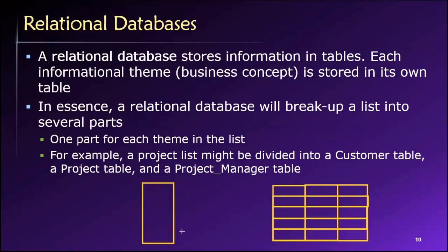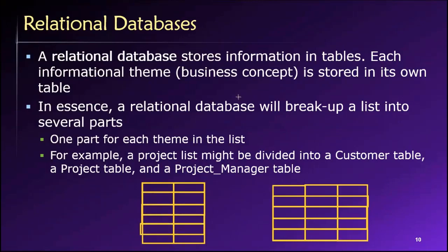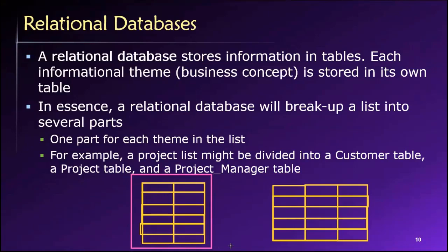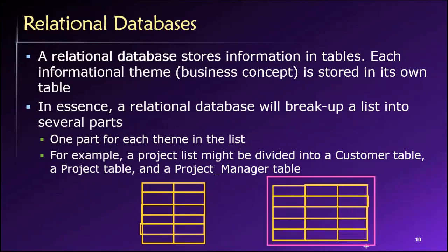For example, we may have a couple of different tables. The basic idea is that each table holds information about just one theme or business concept. So maybe this table stores information about customers and only customers — the only information stored there is customer information. And then over here we store information about products, and only products. We don't put any customer, employee, or supplier information in that table.